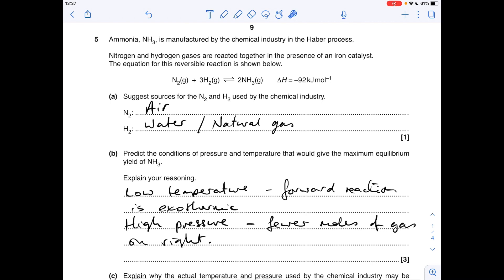In terms of pressure, it's all to do with the numbers of moles of gas on each side of the equation. There are fewer moles of gas on the right hand side - only two moles of gas on the right versus four on the left. So a high pressure would favour the forward reaction.